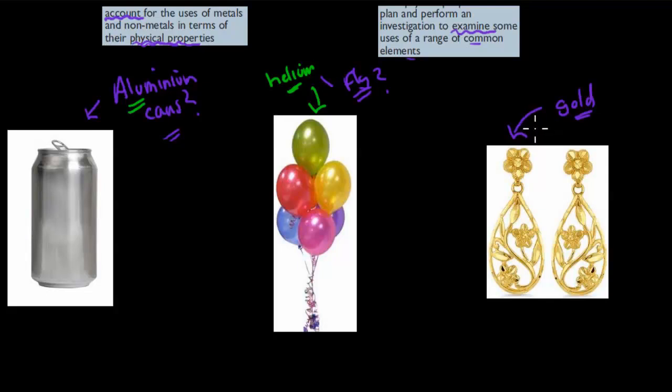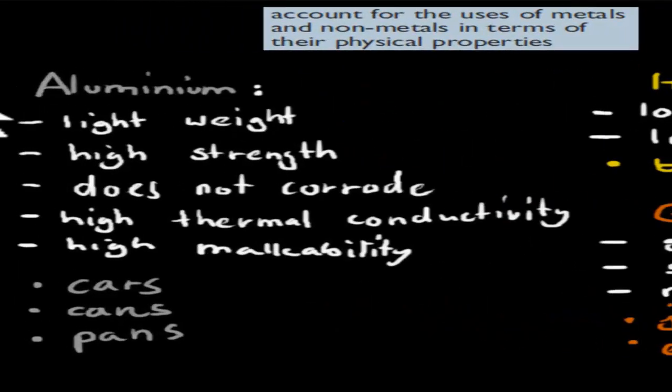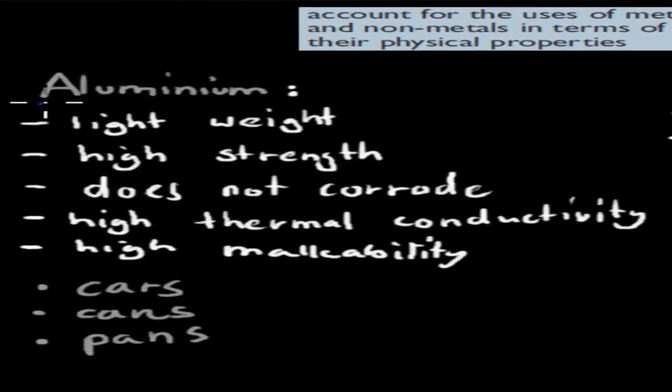And it has also the physical properties of these different substances that makes it perfect to be used in different combinations of uses. So for example, aluminium is good for cans, but there's a reason why as well. So for example, aluminium, and what the actual dot point says is account, so account means we should name reasons why they get used in these certain ways. So account for the use of metals and non-metals in terms of their physical properties. So most of these are physical properties, and there's a couple of chemical ones as well. And I will make sure to mention which are the chemical ones, because the dot point itself says to focus on physical ones.